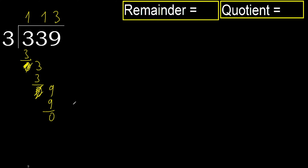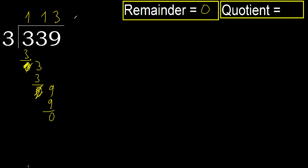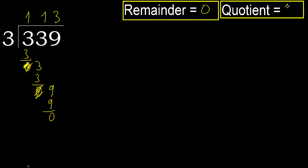There is not a number, therefore finish it. 339 divided by 3 is 113. Thank you.